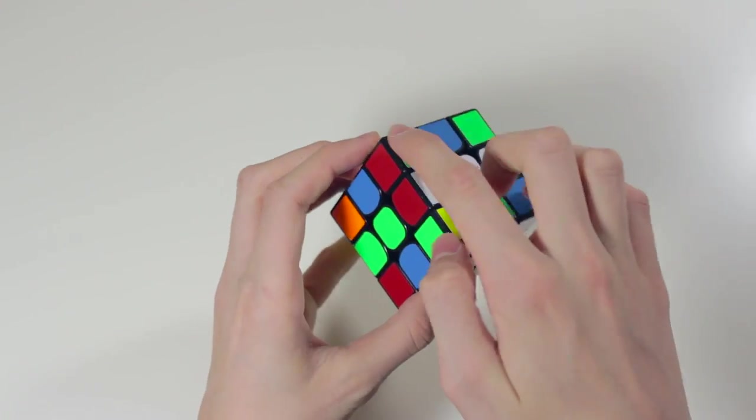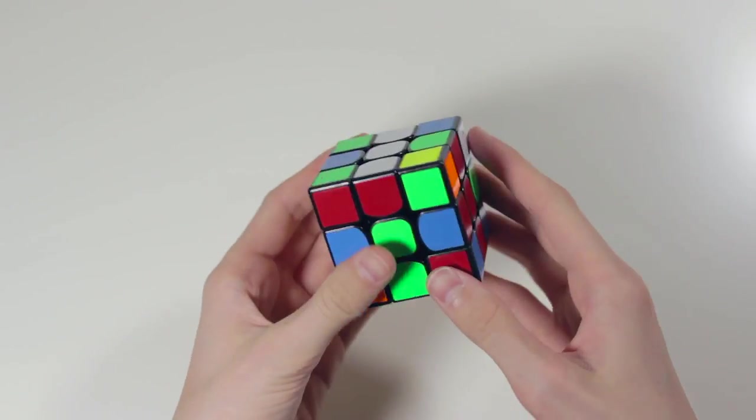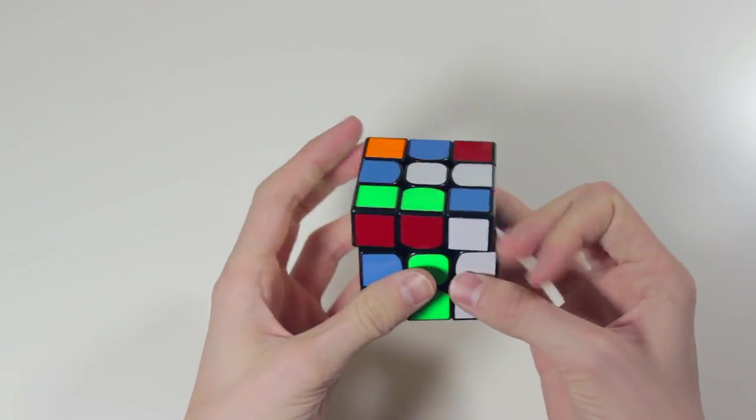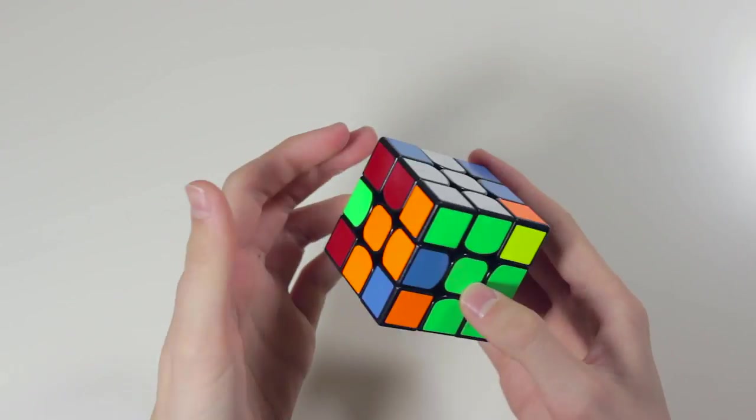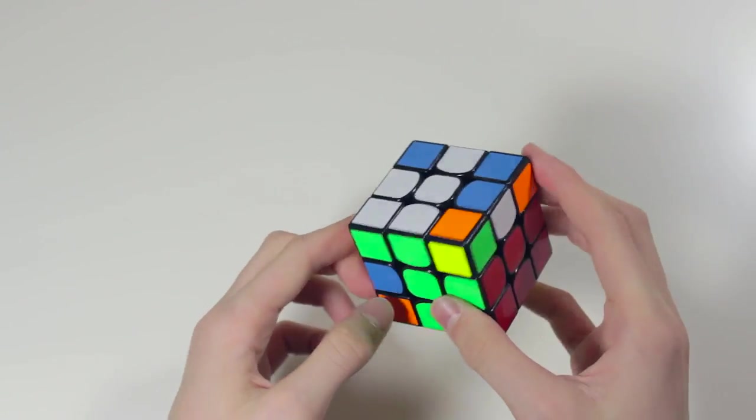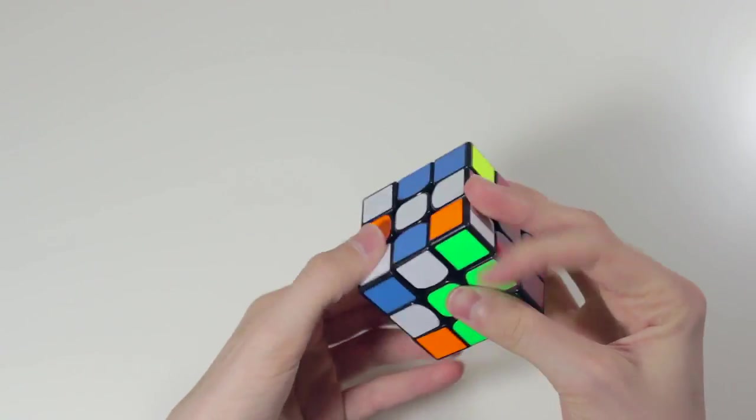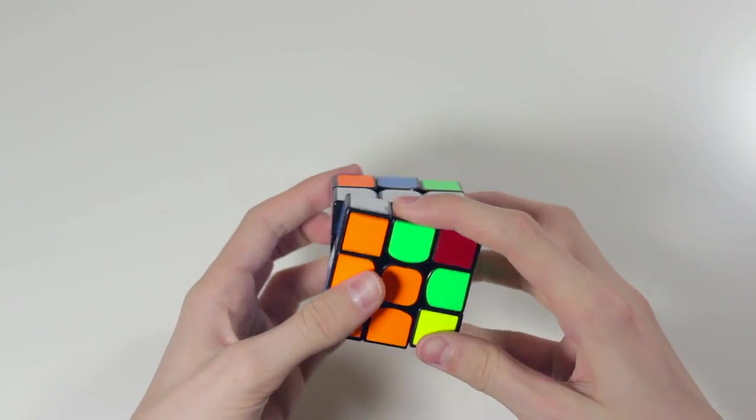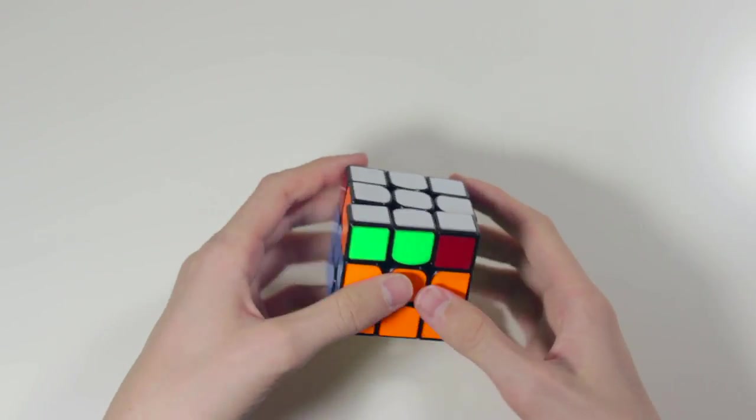And then the first pair I would do is green and red, so I'd rotate because that sets this up better. And then I can do those in the back. And then I have these, and these, so I'd probably do these first. And then these, and then an OLL, and an A-perm.